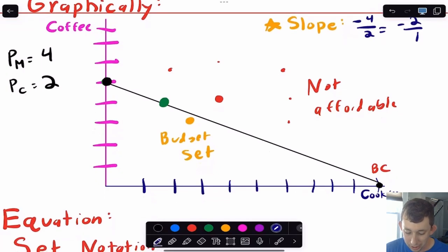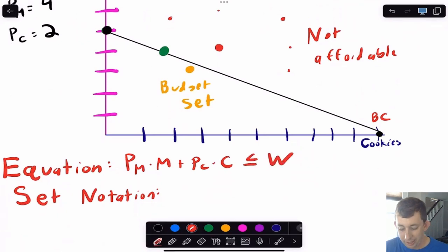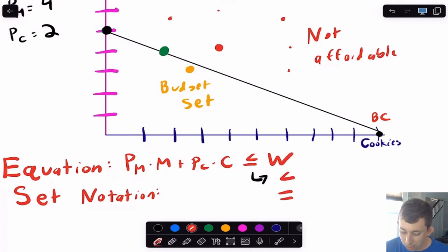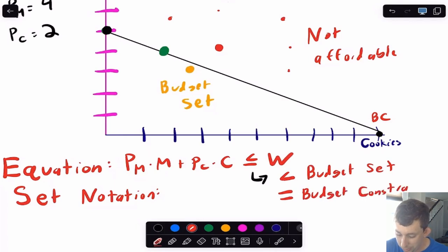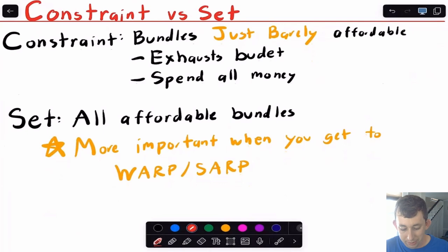The slope of the budget constraint is the ratio of the prices. The equation for the budget constraint is: PM times m plus PC times c has to be less than or equal to the income of $20. We can split that sign: less than corresponds to the budget set — bundles affordable without spending all the money — and equal to corresponds to the budget constraint, where you spend exactly all your money. This distinction will be more important in a couple of videos when we get to WARP and SARP.